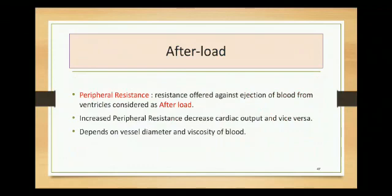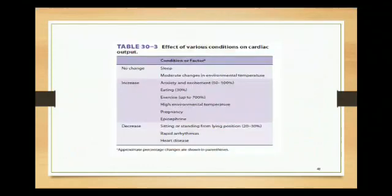Afterload is the peripheral resistance the heart has to overcome when pumping blood into the vessels. The caliber of vessel diameter and viscosity of blood are important. Even if preload is adequate, a high afterload with a lot of peripheral resistance means blood is not being pumped efficiently into the vessels, and this is another factor influencing cardiac output.